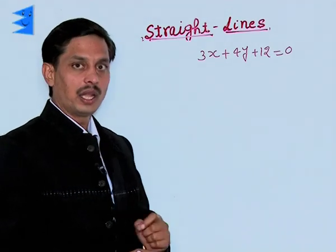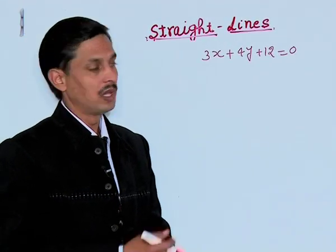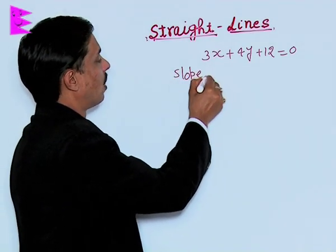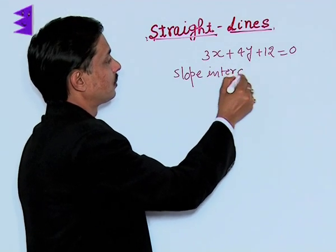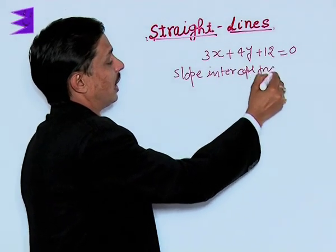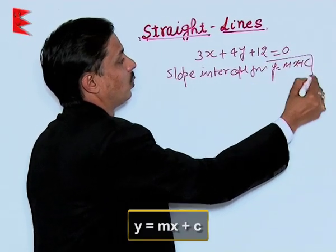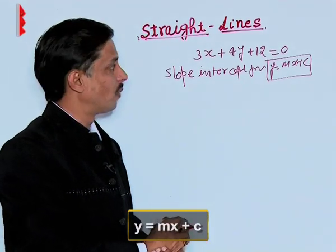How we will convert it into slope-intercept form? What is the slope-intercept form? You can recall that y equals mx plus c types of equations are known as slope-intercept form.